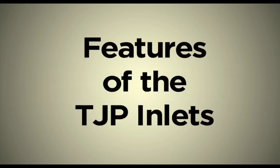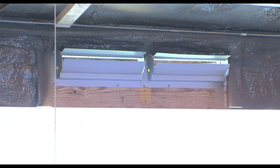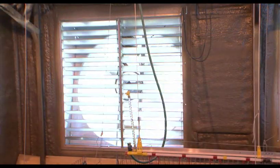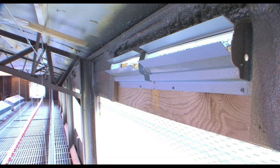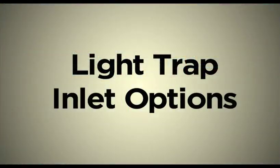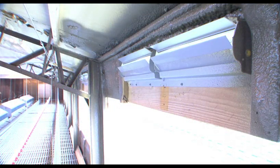Features of the TJP inlets: when minimum fans are on, the lighter weighted inlets open to allow fresh air into the poultry house. When transition fans turn on, both the lighter and heavier weighted inlets open to allow fresh air in. When the house goes into tunnel ventilation, the static pressure will drop and the TJP wall inlets will close. Double L Group offers light trap inlet options that will fit your needs. We hope this video has given you some insight on the installation and use of TJP inlets from the Double L Group.